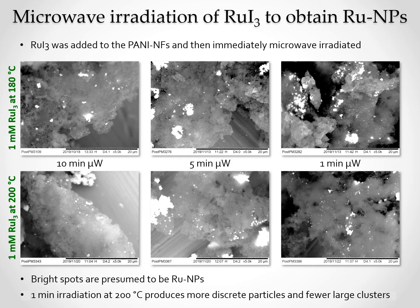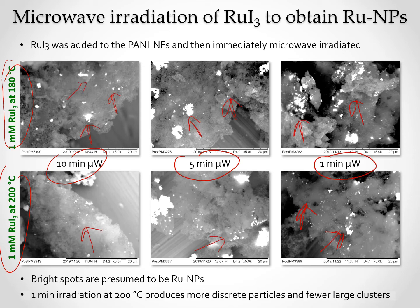The first study shows SEM images from higher temperature and lower time period microwave synthesis conditions. The bright clusters are presumed to be ruthenium nanoparticles. One-minute irradiations at 200 degrees Celsius produce more discrete particles with fewer large clusters.